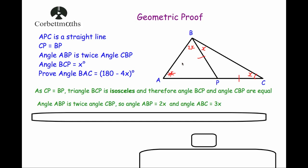Now we've been asked to find this angle — the whole triangle ABC. The angle at the top is equal to 3x and the angle on the right-hand side is equal to x. The angles in a triangle add up to 180 degrees, so to find the missing one we take the two known angles away from 180 degrees. So 180 degrees minus 3x minus x will equal angle BAC. 180 degrees minus 3x minus x is 180 degrees minus 4x, and that's what we were asked to find. So we've done it.